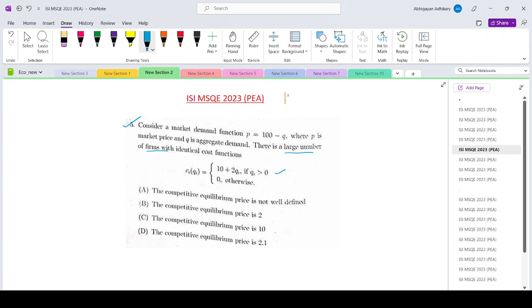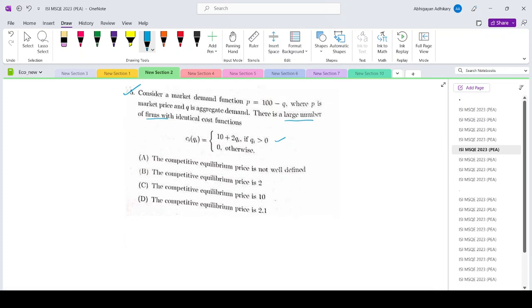Then we have four options: the comparative equilibrium price is not defined, the comparative equilibrium price is 2, the comparative equilibrium price is 10, the comparative equilibrium price is 2.1.